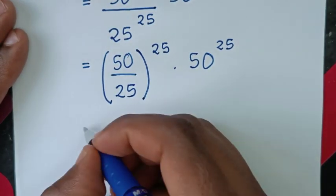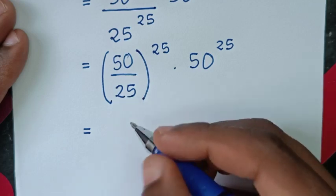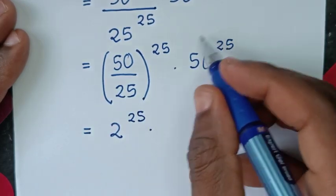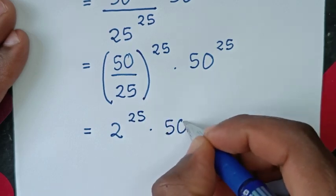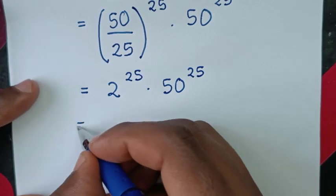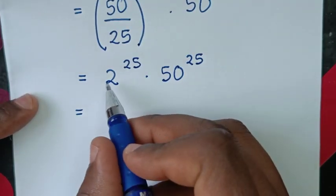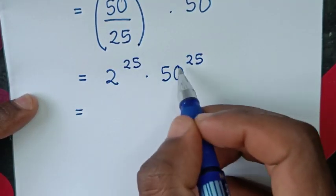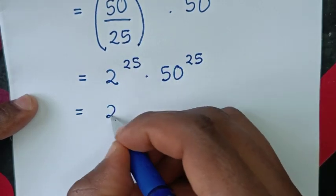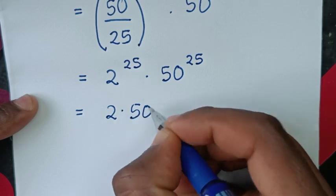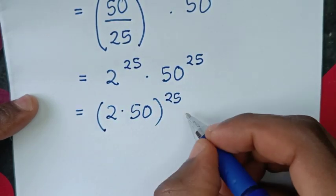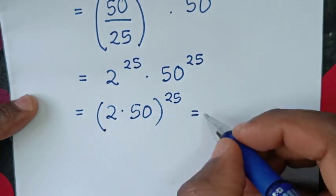From here, 50 divided by 25 is 2, so we have 2 power of 25, times 50 power of 25. Then we apply multiplication of exponents with different bases but the same power of 25, so we multiply the bases: 2 times 50, bracket to the power of 25.